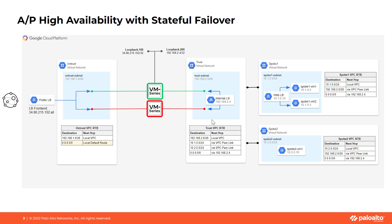Here is the deployment architecture that we are going to use for demonstration. We have two VM series firewall instances deployed in active-passive high availability mode, which are front-ended by the public or external load balancer on the untrust side of the firewalls, and there is an internal load balancer front-ending the trust side of the firewalls. We also have a spoke VM hosted with a web server or Apache server installed.